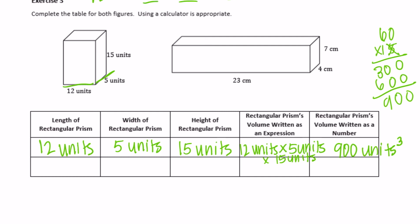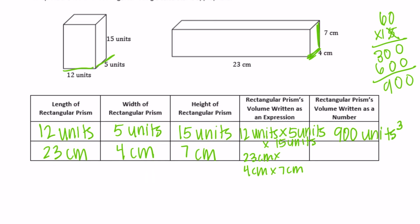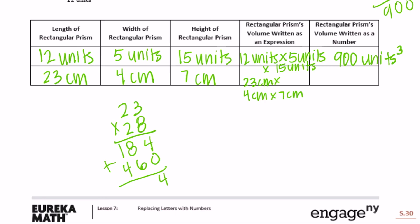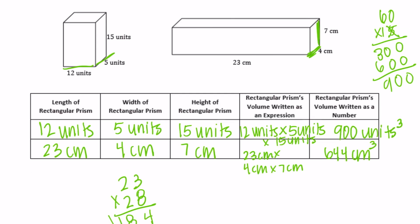The second prism: length is 23 centimeters, width is 4 centimeters, height is 7 centimeters. Expression: 23 cm times 4 cm times 7 cm. To find the volume, first do 4 times 7 equals 28, then 23 times 28: 3 times 8 is 24, carry 2; 8 times 2 is 16, plus 2 is 18; then 2 times 3 is 6, 2 times 2 is 4; adding up gives 644 centimeters cubed. That's the end of lesson 7.